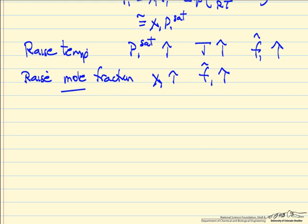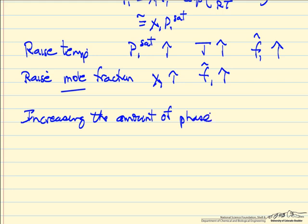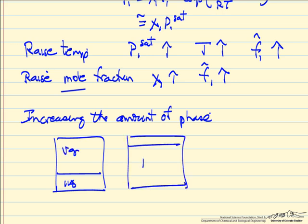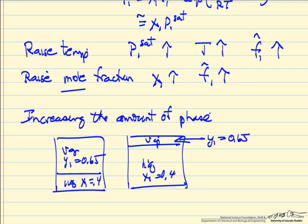Keep in mind this is increasing the mole fraction. Increasing the amount of a phase does not increase fugacity — fugacity, like many variables we look at, is an intensive variable. So if we had two systems — liquid and vapor — with very different amounts of liquid and vapor, but at equilibrium with x₁ = 0.4 and y₁ = 0.65, then both systems share the same mole fractions at equilibrium. The amounts of the phases are not important; the concentrations, which are related to mole fractions, are what matter.